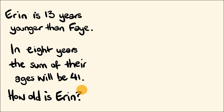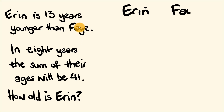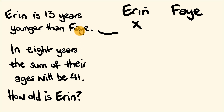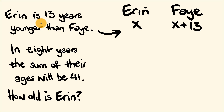We'll start by writing the names down — we have Aaron and we have Faye. What are we trying to work out? How old is Aaron — that last sentence. We give Aaron the value of x. Aaron is 13 years younger than Faye, so Faye is 13 years older than Aaron. Aaron is x years old, so Faye is going to be x plus 13 years old.